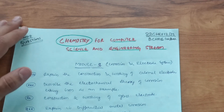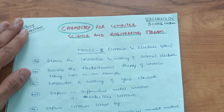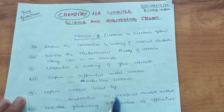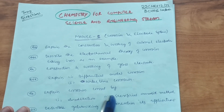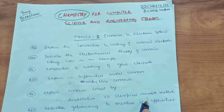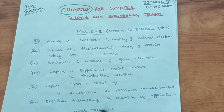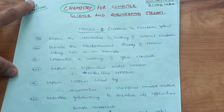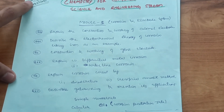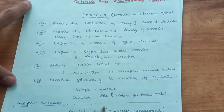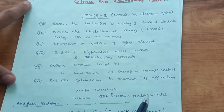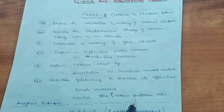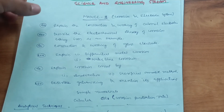Next, explain differential metal corrosion and waterline corrosion. Then explain corrosion control by anodization and the sacrificial anodic method — this is a super important question in this module, so focus on anodization and the sacrificial anodic method. Then describe galvanizing and mention its applications. Also practice some simple numericals — calculate CPR, that is the corrosion penetration rate. Try three to four problems so you can easily get 20 marks in Module 3.